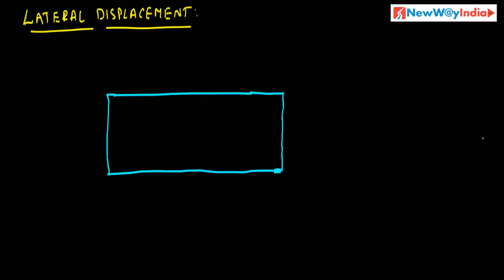This is a glass slab. If a light ray is incident on this glass slab, it will get refracted — that means it bends towards the normal. This is the incident ray and this is the refracted ray. At the other surface of the glass slab, the light ray will get refracted again, meaning it moves away from the normal. The light ray passes from denser medium to rarer medium.